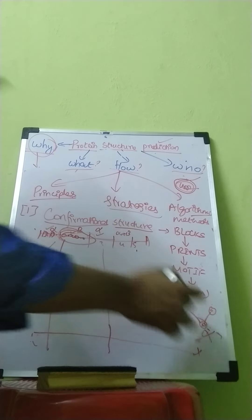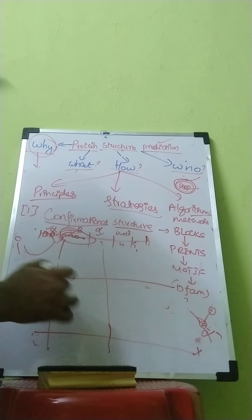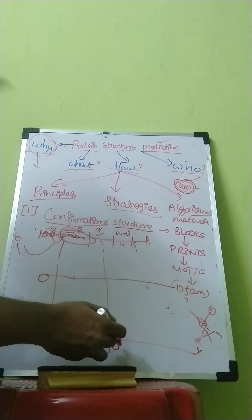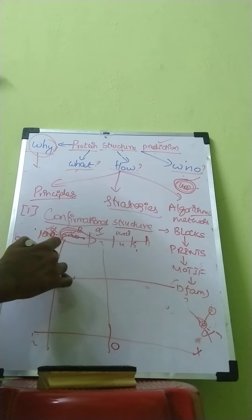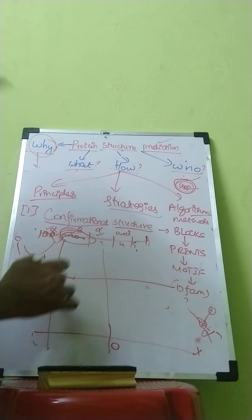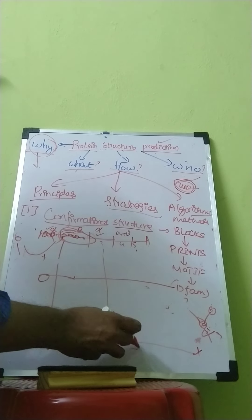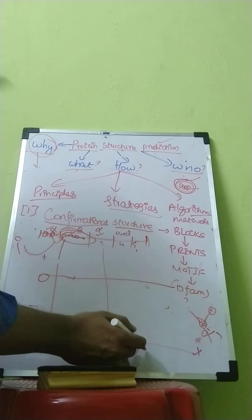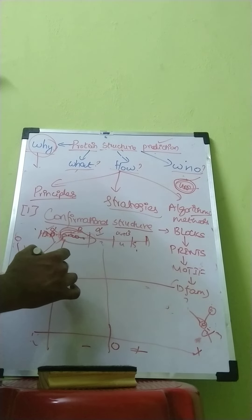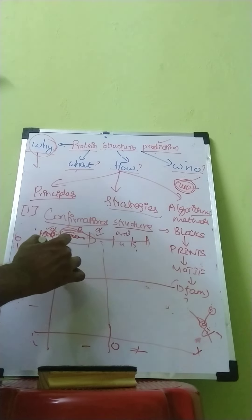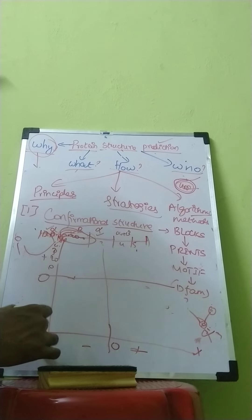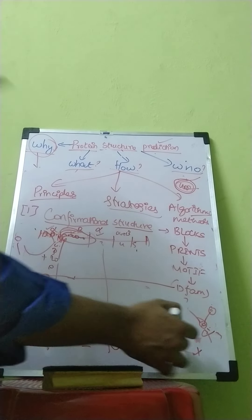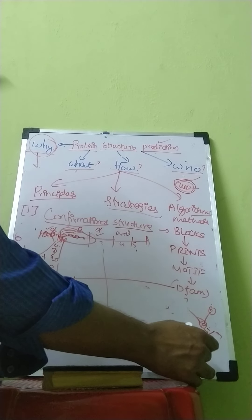There is an X-axis and Y-axis. There is 0 degrees at the center of this axis, and there will be a plus and minus direction. So 10, 20, 30, 40, likewise to 180. In the same way, 180 on the other axes as well.